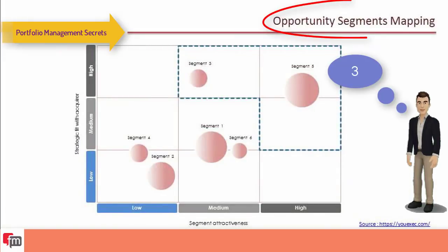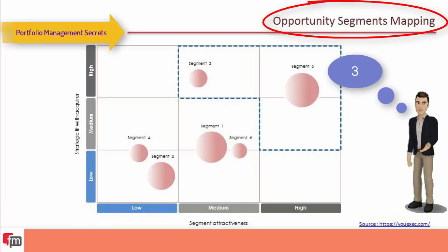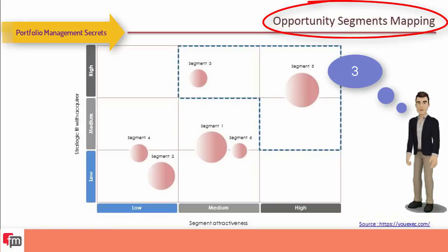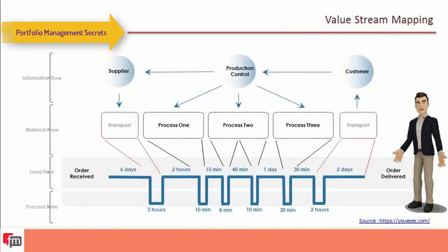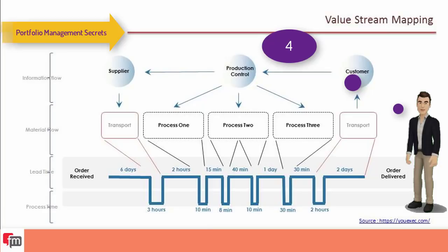The third tool is the opportunity segments map, where the size of each bubble represents segmented revenue. To assess strategic fit, consider technological and process steps, customer perspectives, and business models. To assess segment attractiveness, consider growth potential, margin potential, and competitive intensity. As stated before: no value, no portfolio.